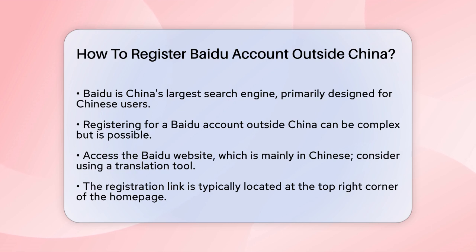To start, you'll need to access the Baidu website. Since the site is mostly in Chinese, you might want to use a translation tool or browser extension to help you navigate. You can find the registration link usually at the top right corner of the homepage.